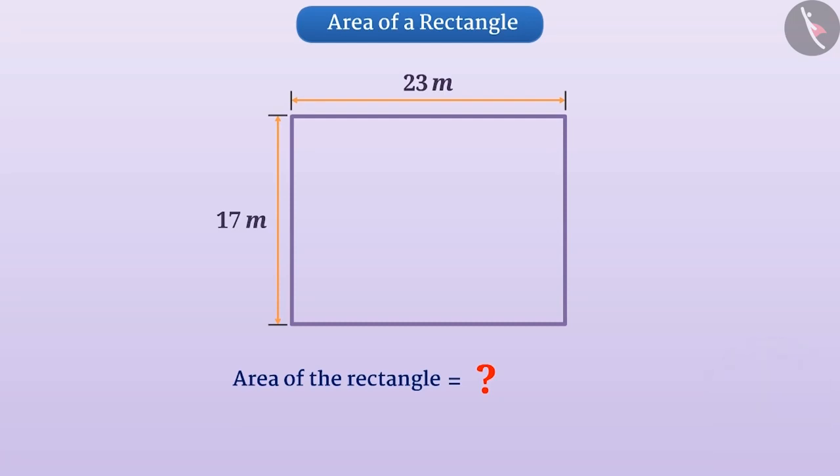If your result is 391 square meters, it means you are well versed with the concept of area of a rectangle.